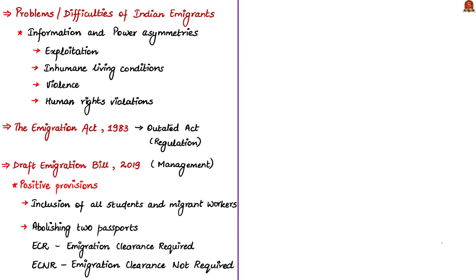There are a lot of information and power asymmetries in the global labor markets, which include exploitation, inhuman or worst living conditions, violence, and human rights violations with regard to the emigrated Indians. To help the emigrated Indians safeguard their rights and welfare, the Indian government enacted the Emigration Act of 1983. The authors tell that this particular act looked like an outdated act when it was enacted in Parliament.